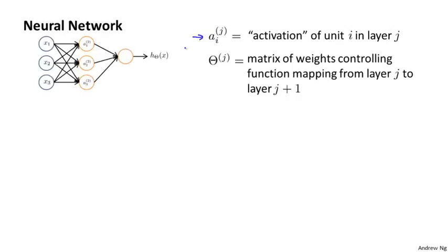So concretely, this a superscript 2 subscript 1, that's the activation of the first unit in layer 2, in our hidden layer. And by activation, I just mean the value that is computed by and that is output by a specific unit.